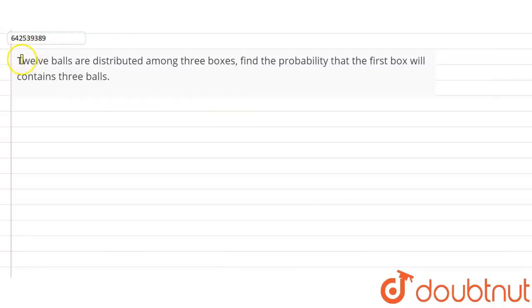The question says that 12 balls are distributed among 3 boxes. So we have 3 boxes and we have to distribute 12 balls. We have to find the probability that the first box will contain 3 balls.